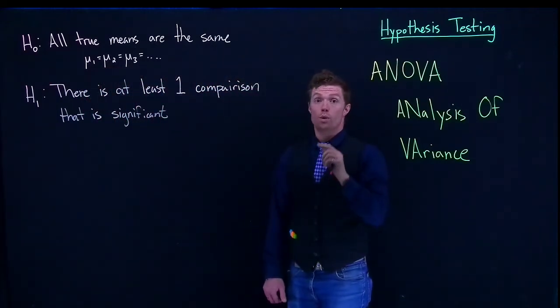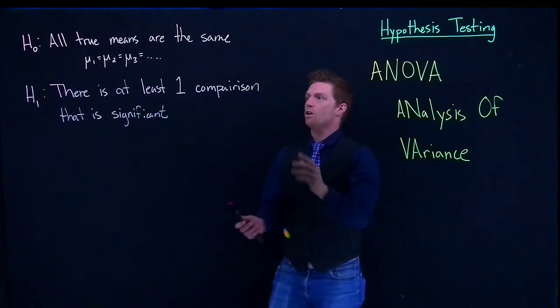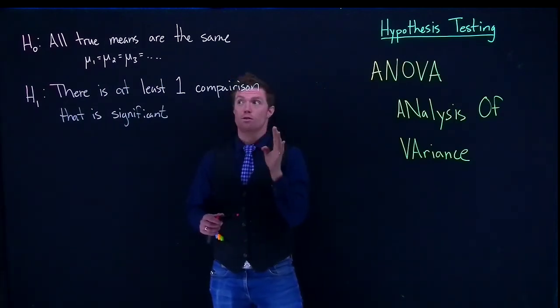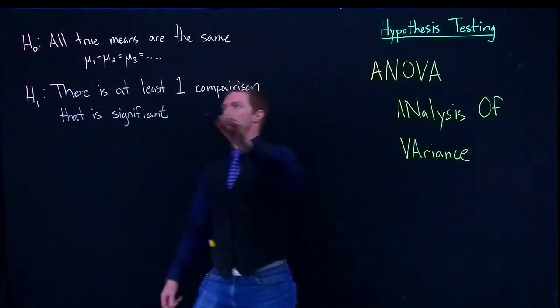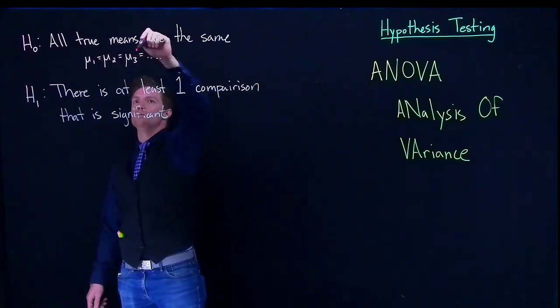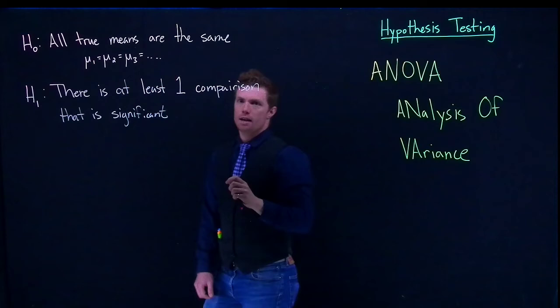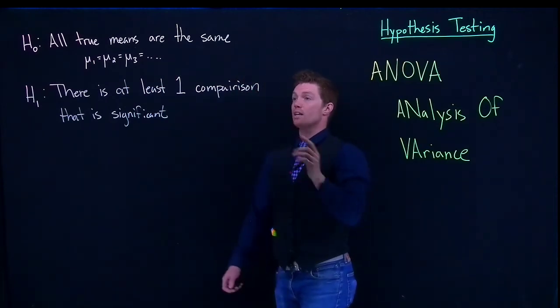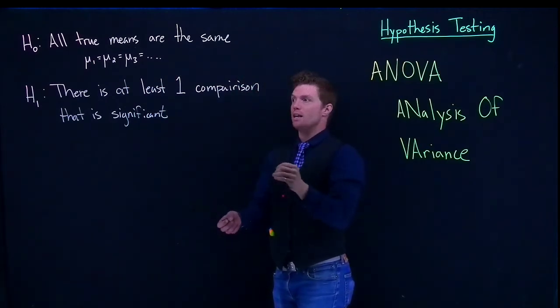We want to be able to say this because it's not that they're all different from one another—it doesn't have to be that. So let's suppose we have mu1, mu2, and mu3. The baseline is that they are all the same. The alternative is that there's at least one comparison in there that is different.